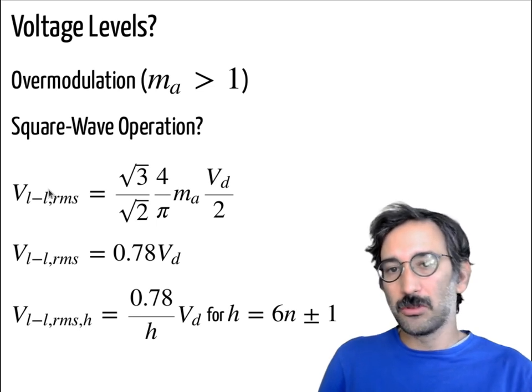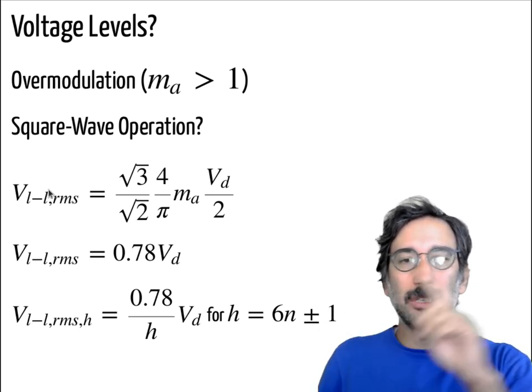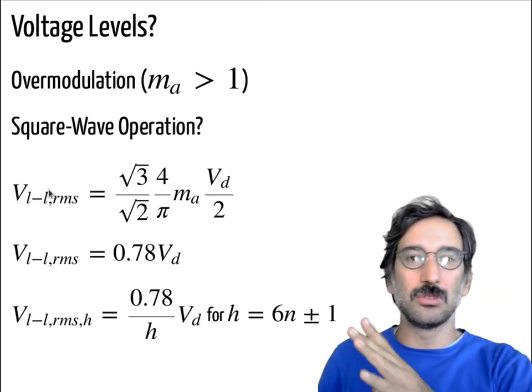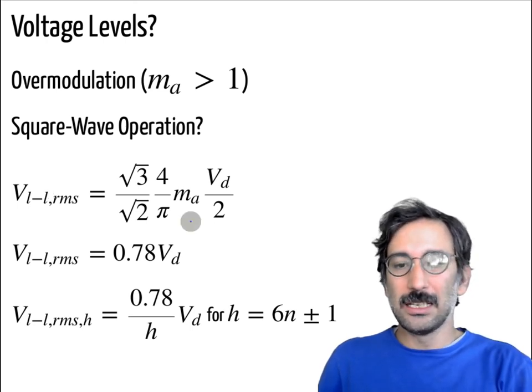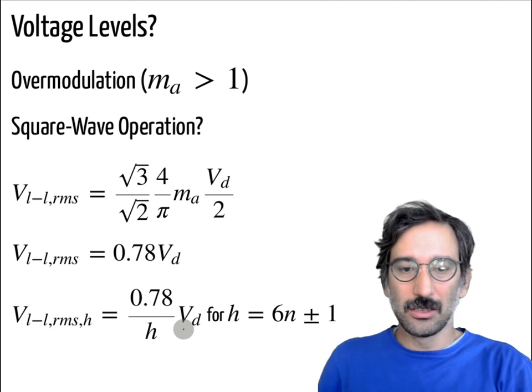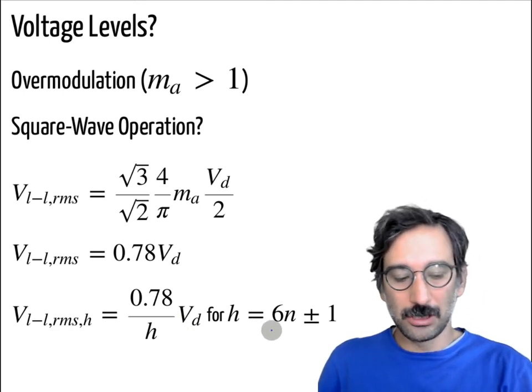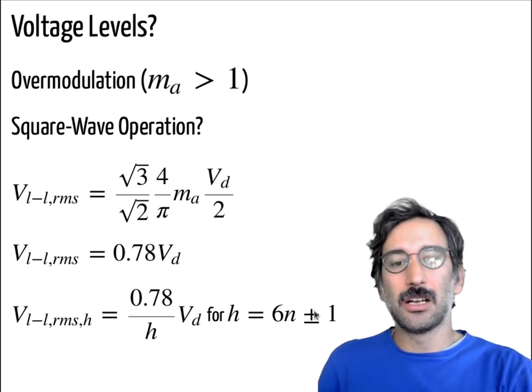So for other harmonics, if you just get into the square wave operation, then you are not seeing like the harmonics at the modulation mf, but you see like third, fifth, seventh harmonics as well. And depending on your load, maybe you can get rid of the third harmonics. So you will have harmonics in that configuration.